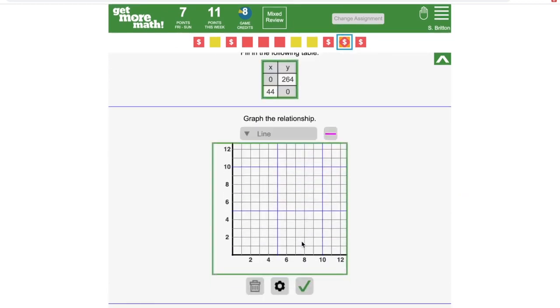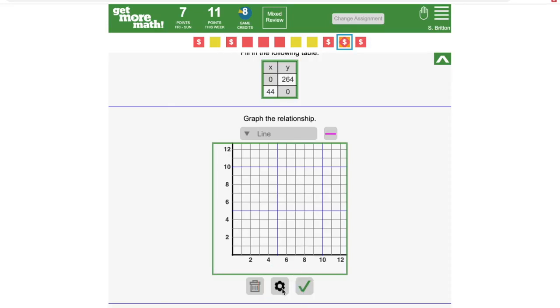First, since it's a word problem, I need to give this graph labels. To do this, I'm clicking on the settings button below the graph. From the graph settings, you can change the labels and the scale of your graph for both the x and y axes.